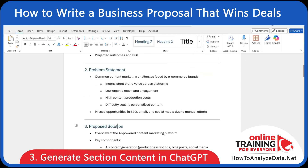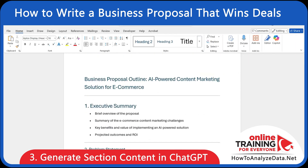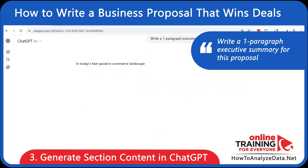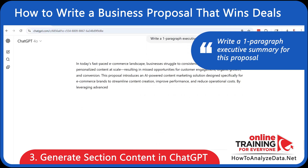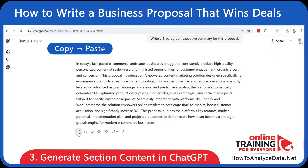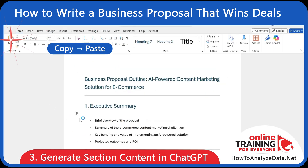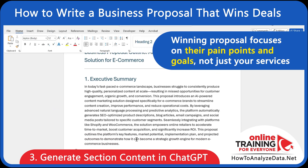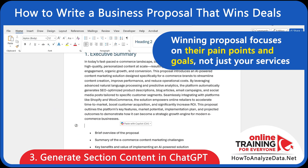In the next step, with the outline ready, let's refine the executive summary. We'll ask ChatGPT to write a one-paragraph executive summary for this proposal. We can copy and paste it into Word and revise the language to make it more client-focused. Remember, a winning proposal focuses on their pain points and goals, not just your services.